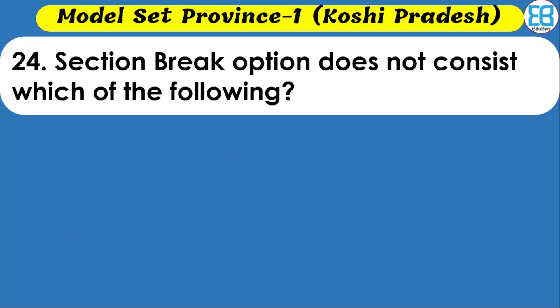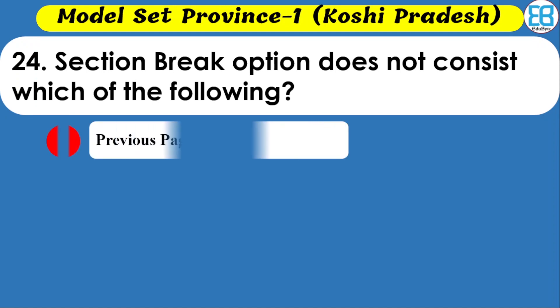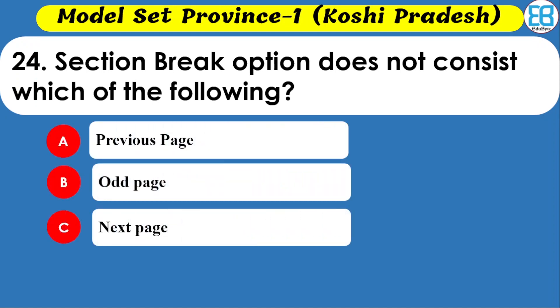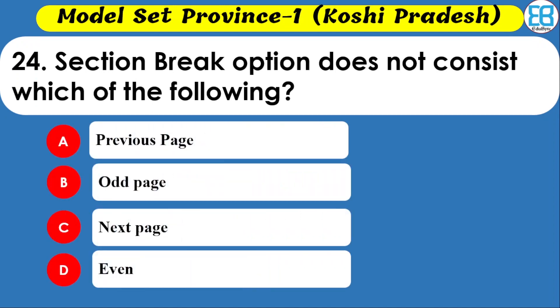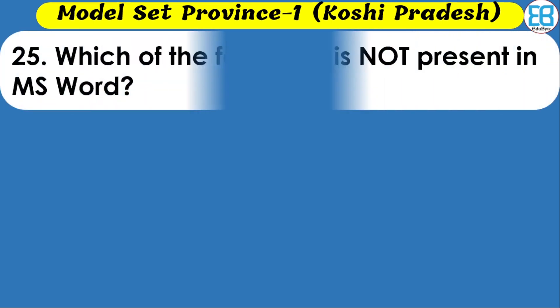Section break options do not consist of which of the following? Options include previous page, next page, and even. The correct option is previous page — previous page is not a section break option. Which of the following is not present in MS Word? Options are word count, margin, and brush. The correct option is brush.